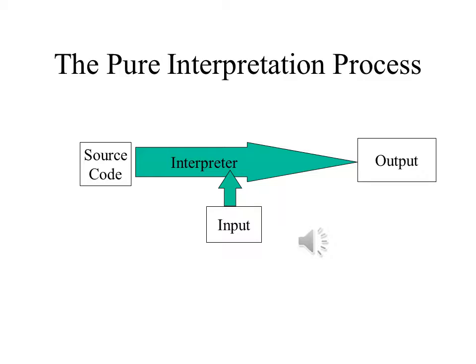Interpreting is different. The interpreter reads the program as its data and executes the instructions as it encounters them, transferring control to other parts of the program when instructed to do so. It can accept data from various sources and produce outputs like other programs, but no executable version of the program is saved.